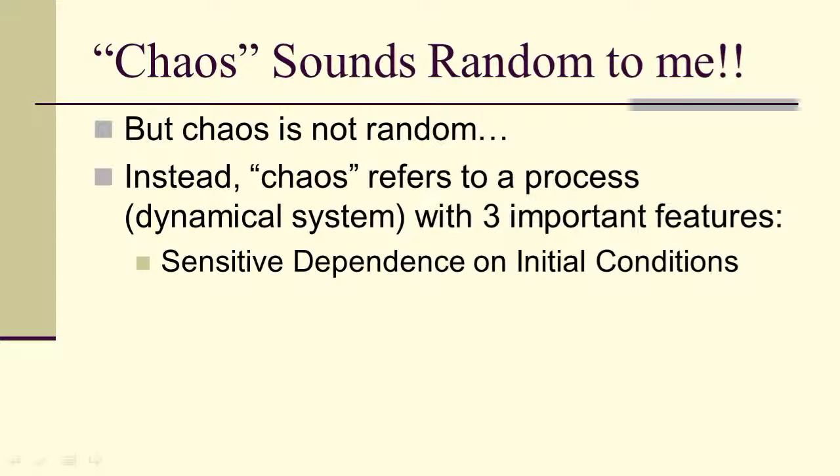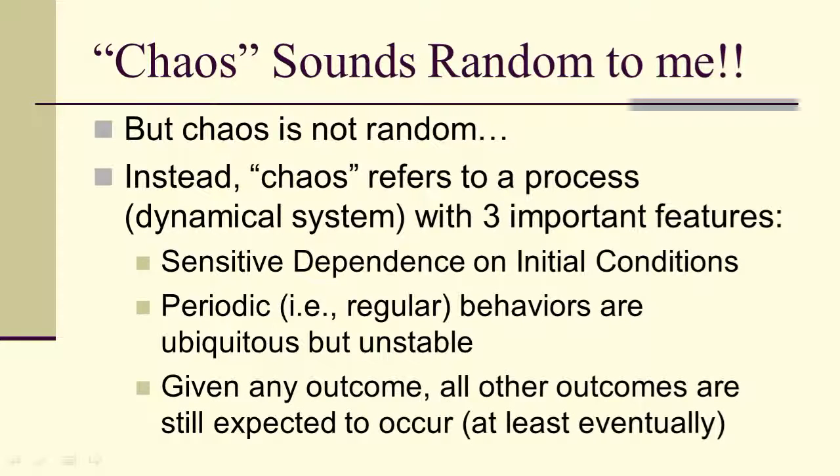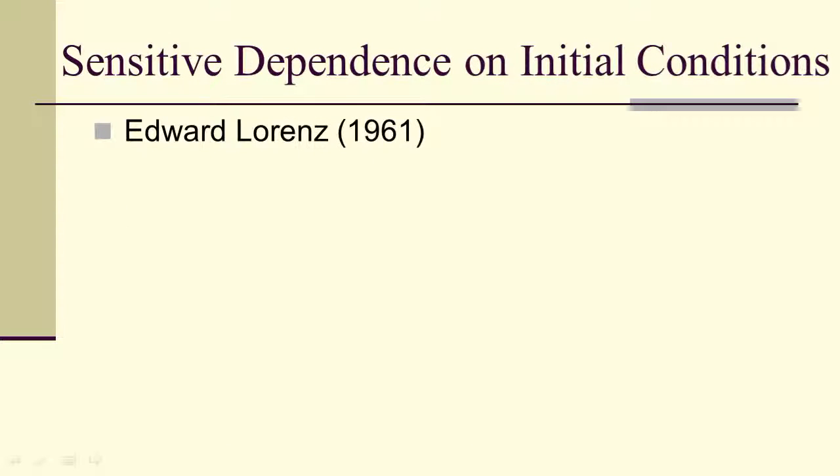Sensitive dependence on initial conditions. Periodic behaviors are ubiquitous but unstable. And given any outcome, all other outcomes are still expected to occur, at least eventually. This last one is called topological transitivity, and I'll explain it in a little more detail later.